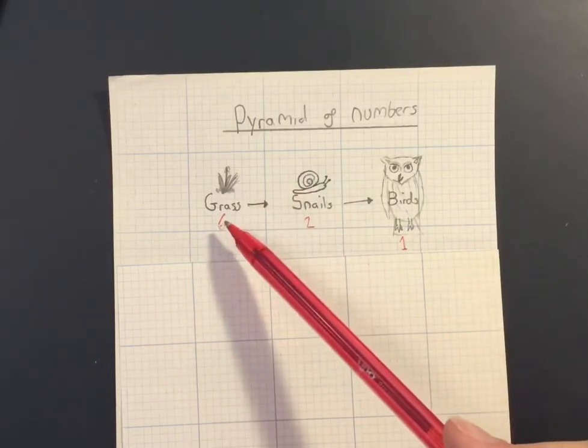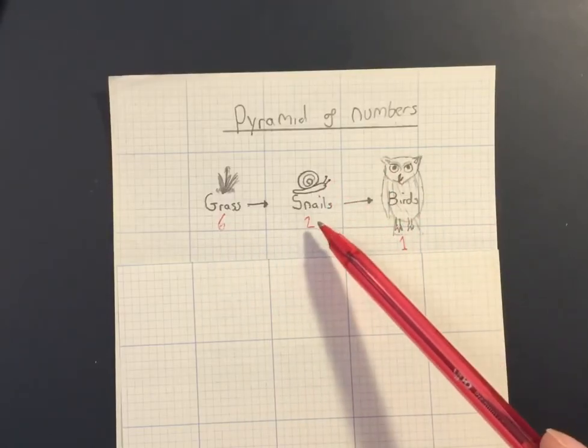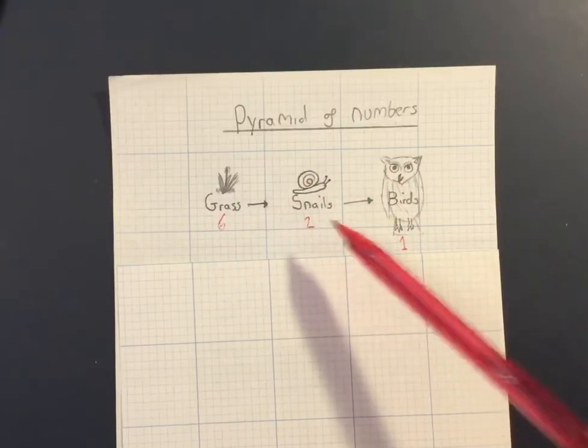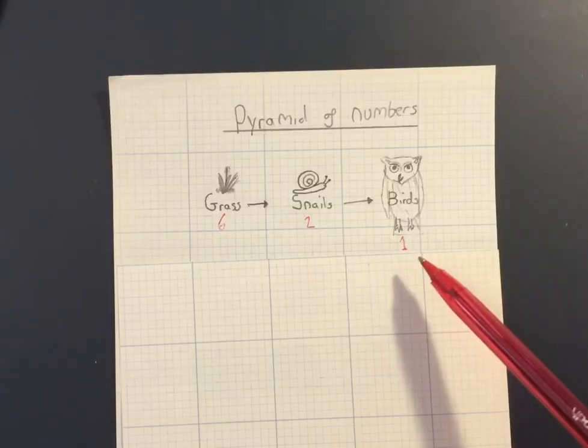So in my food chain here, we start with the producer which is the grass. We then have the snails which are the primary consumer, and then we have our secondary consumer which are the birds.